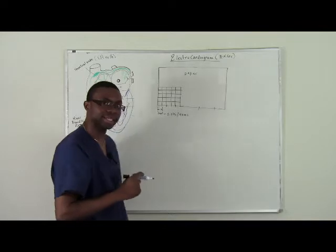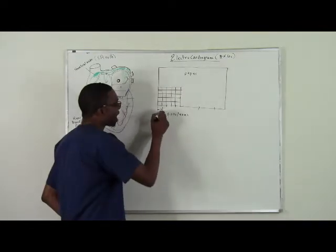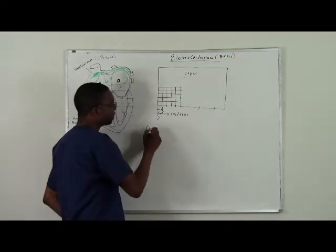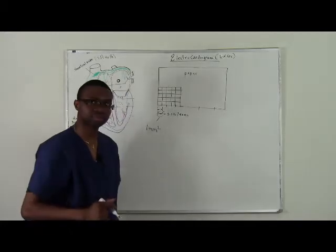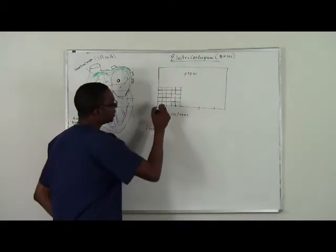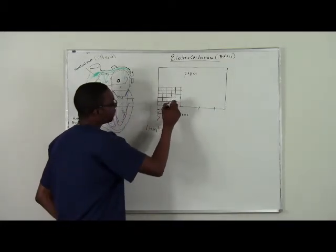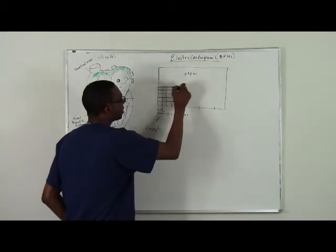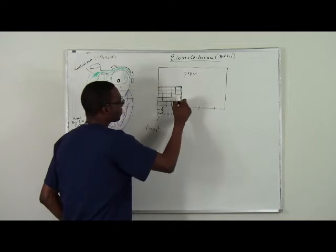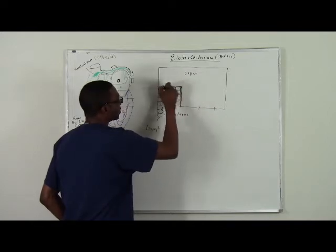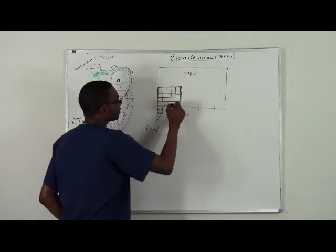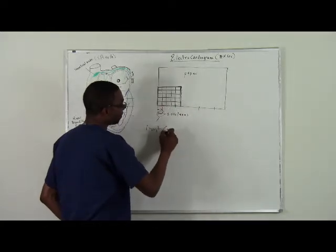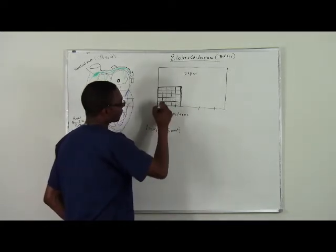There are small boxes on the EKG and each box is actually one millimeter square. Then you can count one, two, three, four, five. There's five small boxes which forms a thick box and those boxes are five millimeters squared because it's five little squares.